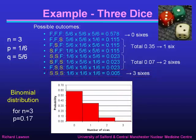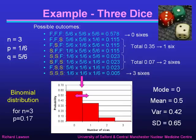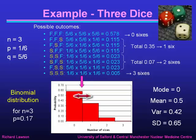This is the binomial distribution for n equals three with p equals 0.17. Once again it has a mode of zero. The mean is 0.5 — as you might expect with three dice and a one sixth probability. The variance is 0.42, which means the standard deviation is 0.65.